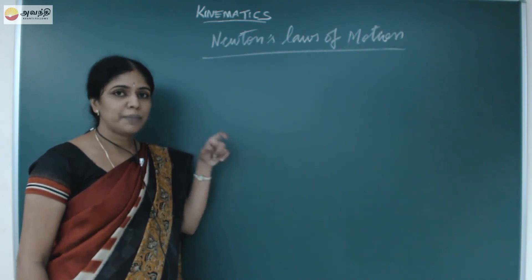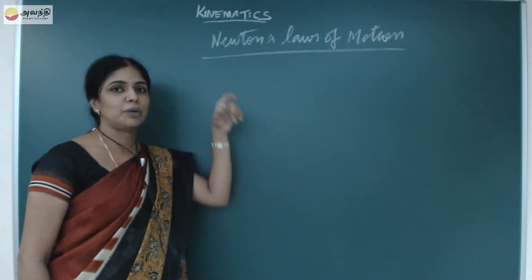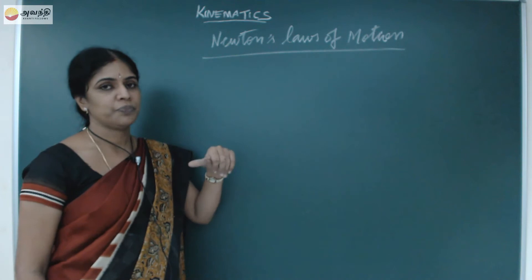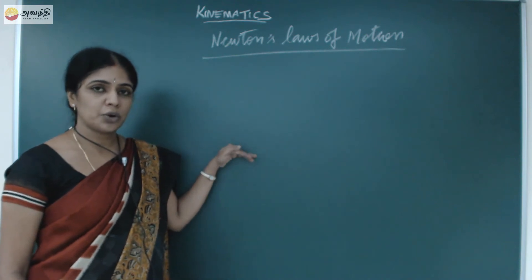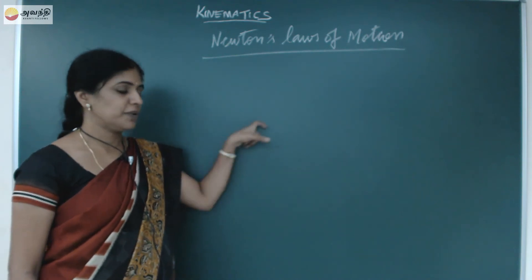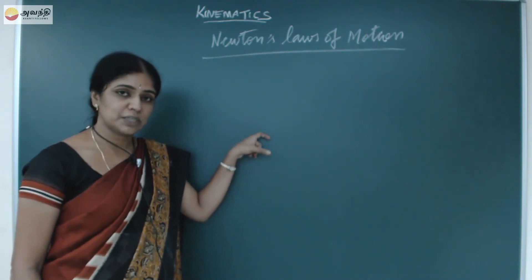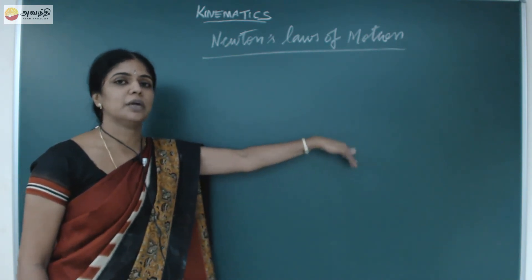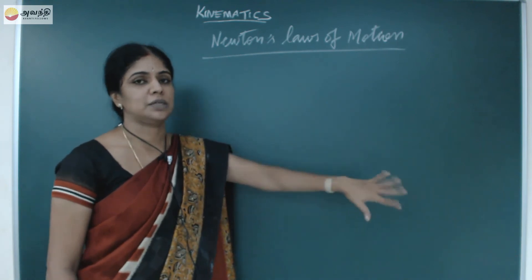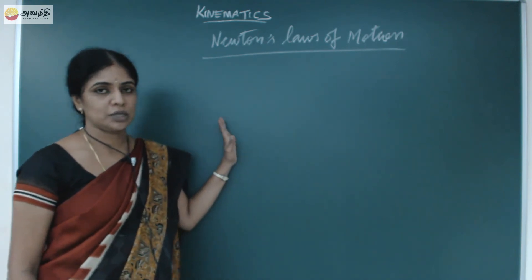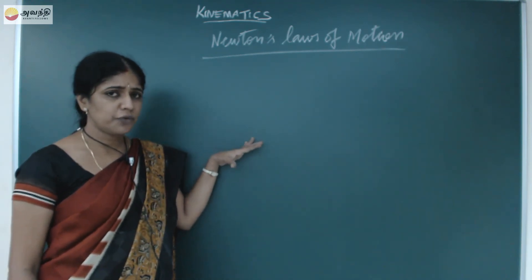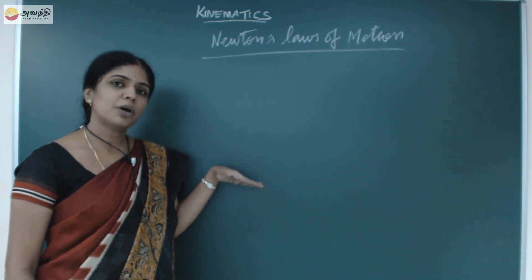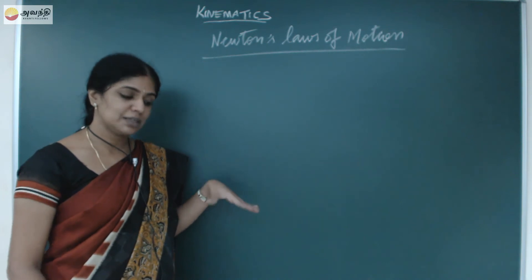The frictional force is what makes a moving object come to rest. So what did Galileo tell us? It is the frictional force which is responsible for a moving object to come to rest. So if the frictional force is less, what happens?